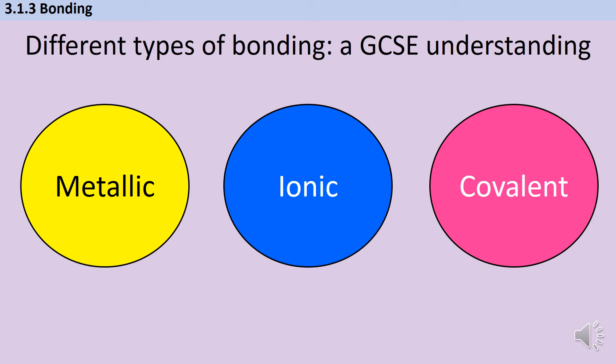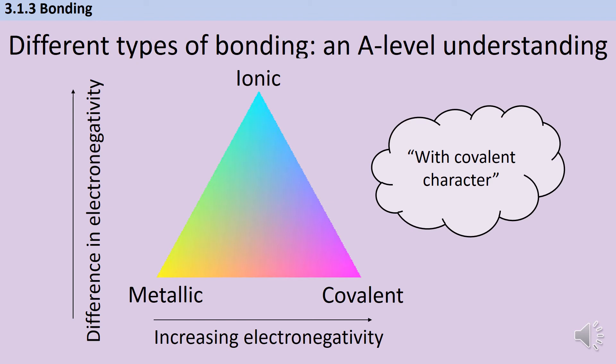Yes, that's a basic good rule of thumb, but it is very much simplified. If we actually look at the whole periodic table rather than just the extremes, then we start to see that really bonding is more of a spectrum. Yes, you do have metallic bonding, ionic bonding, and covalent bonding, and yes, there are pure examples of those.